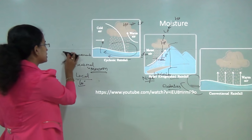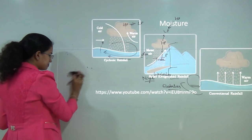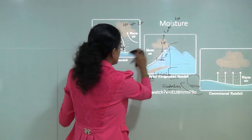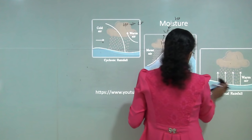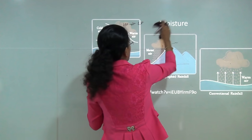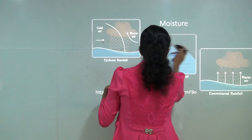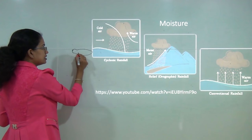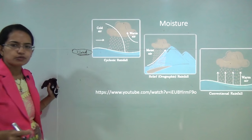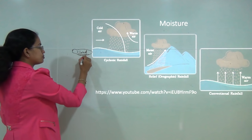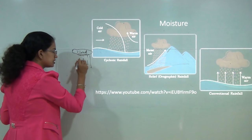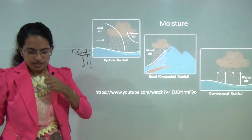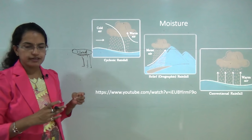Moving on to moisture and precipitation. An air mass heats up from the land, becomes hot, and rises. When it rises, it reaches a saturation point and condensation occurs, leading to the formation of clouds. These clouds then pour down as rainfall.